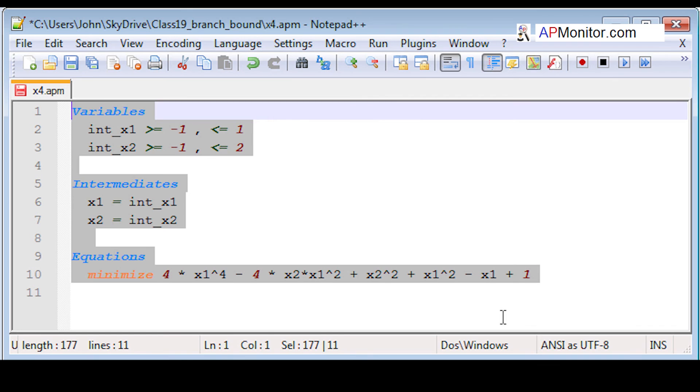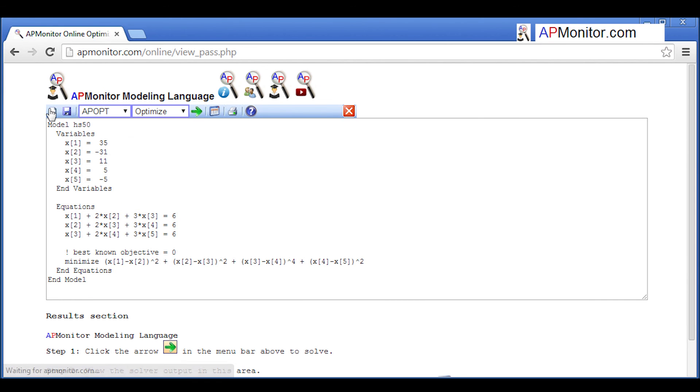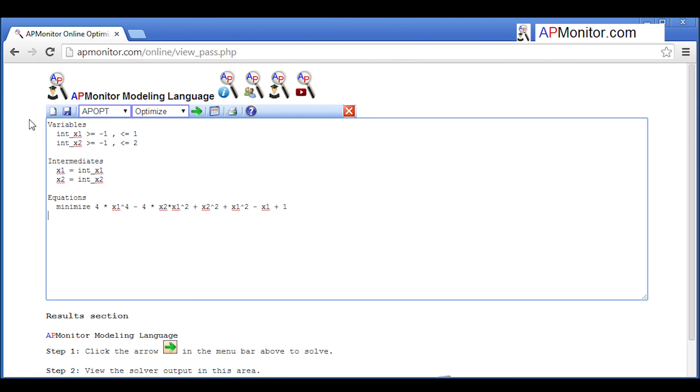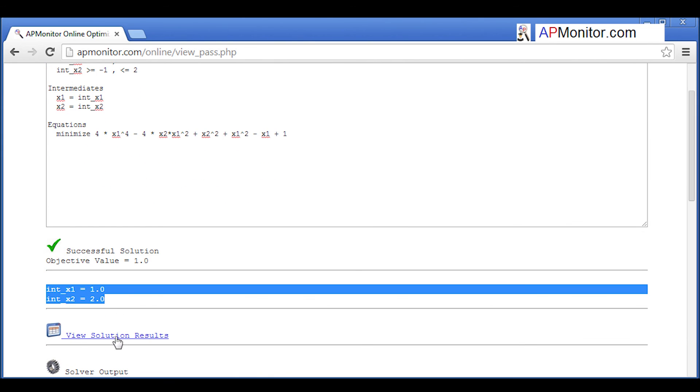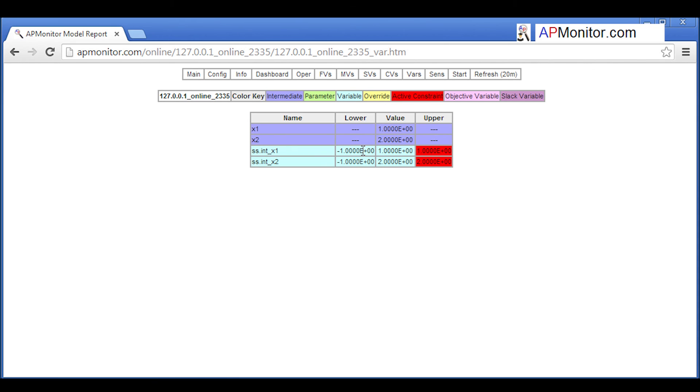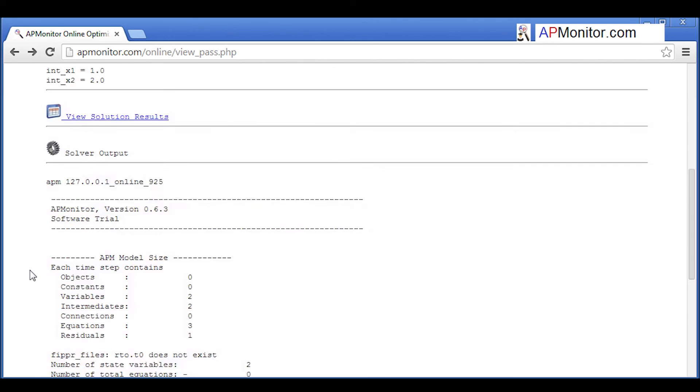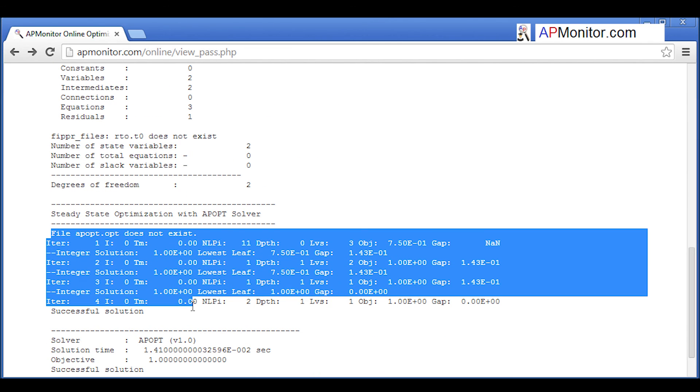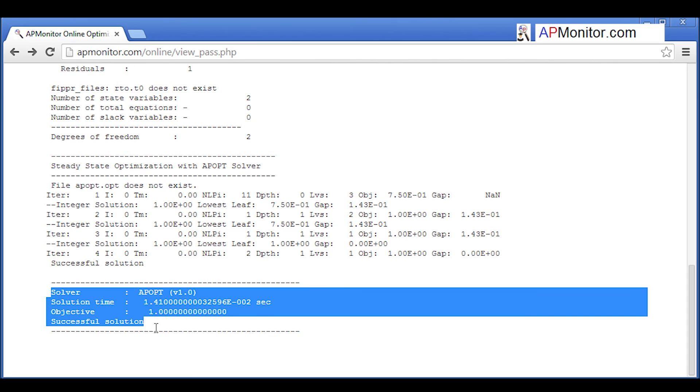I'm going to go to apmonitor.com, click Solve Optimization Problems, replace the text box with the one that you see, and then it will solve. This one found x1 equals 1, x2 equals 2. Then I'm going to go back and take a look at the solver as well. You can see that it took four iterations, and you can see the objective function and the solution time.